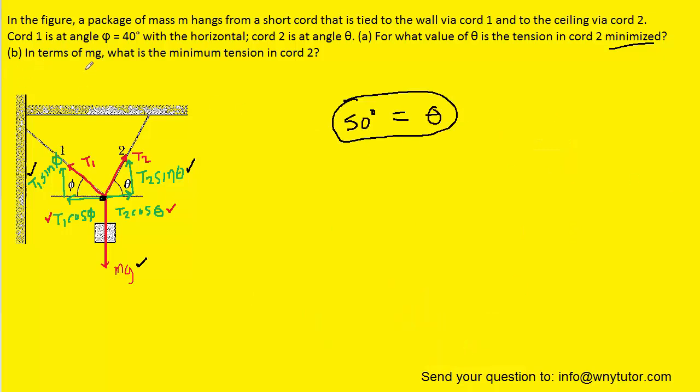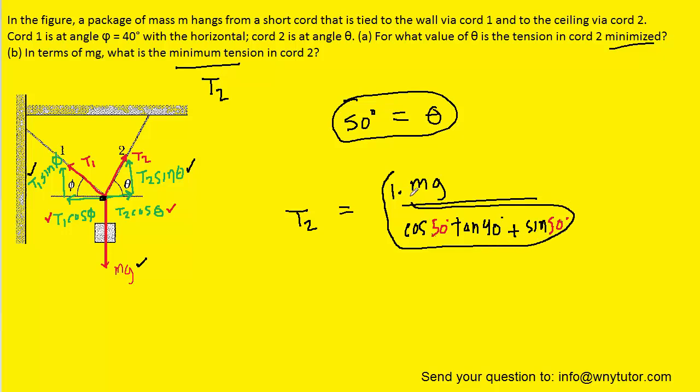And then to actually find the value in terms of mg of that minimum tension or T2 we can plug it back into the T2 formula. We'll recopy that here. Remembering that theta is 50 degrees we can plug that in. We want to leave our answer in terms of mg. Don't forget in the numerator there's a one here. So pick up your calculator and do one divided by this entire term in the denominator. And when you do that you should get 0.77 mg. This is the correct answer to part B.